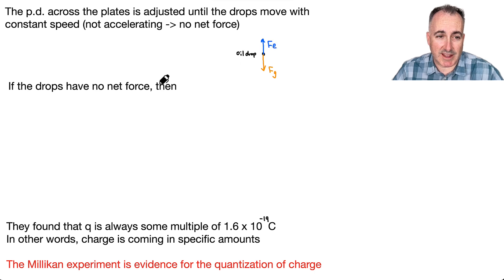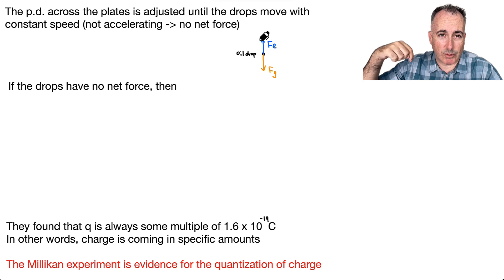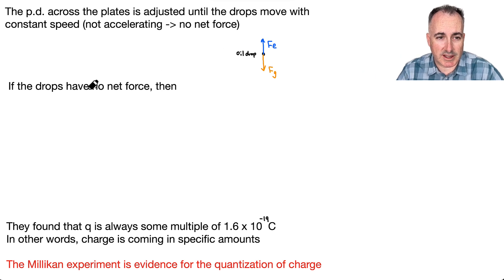So that means then that that downwards F_G is going to be exactly equal to the upwards F_E. That's because if they have no net force, then the upwards force has to equal the downwards force. That means you can say then that F_E is going to equal F_G.